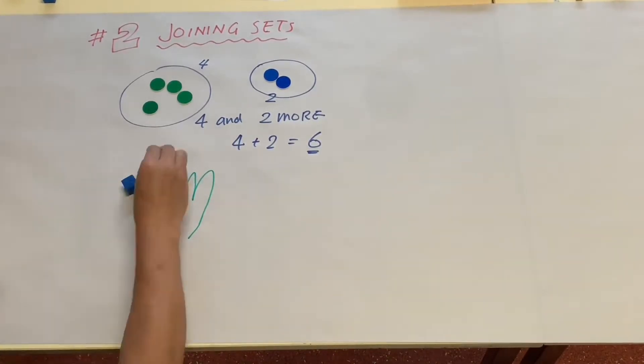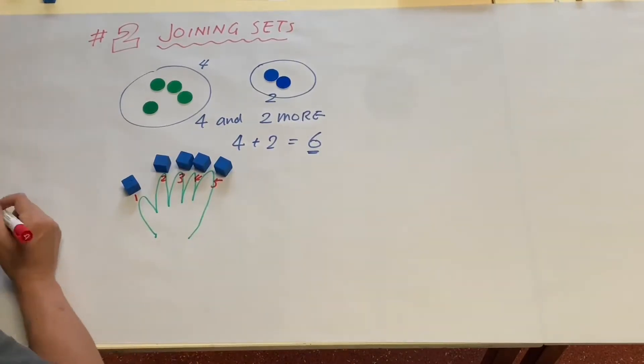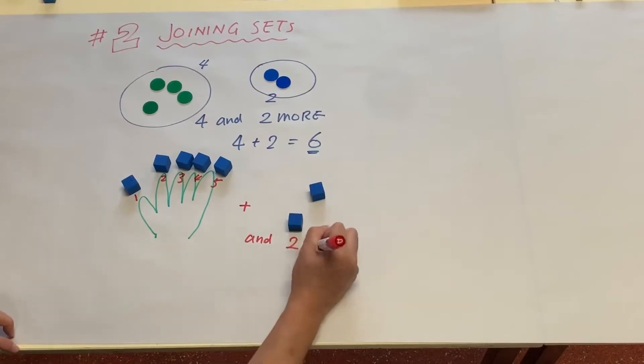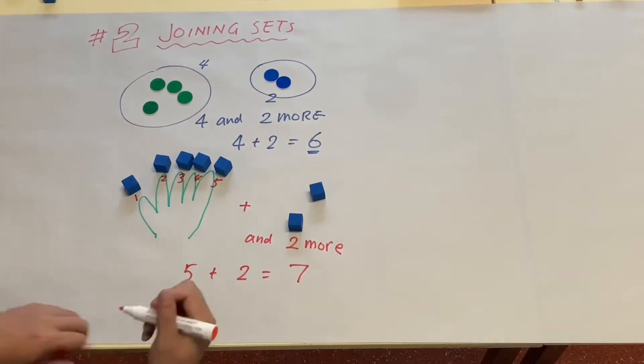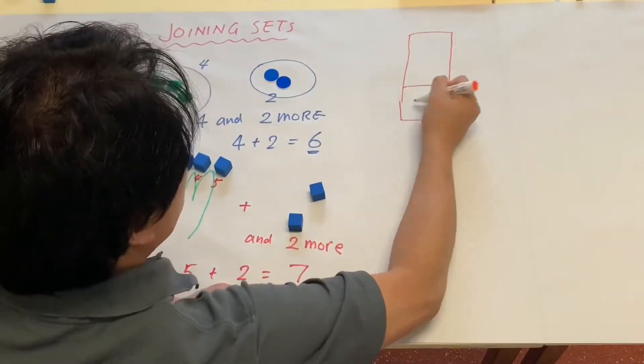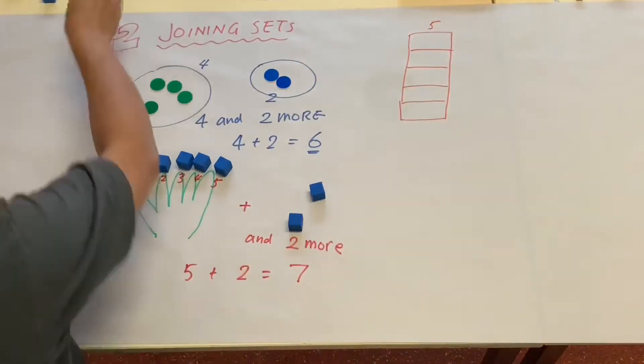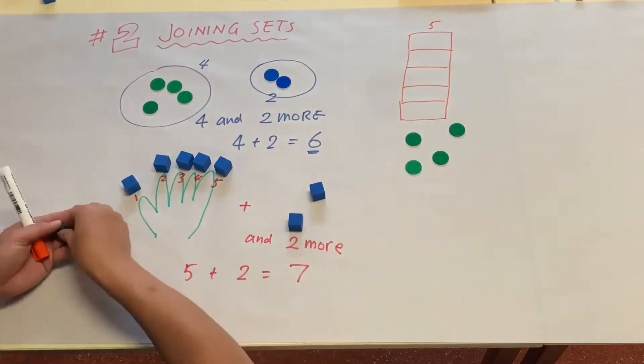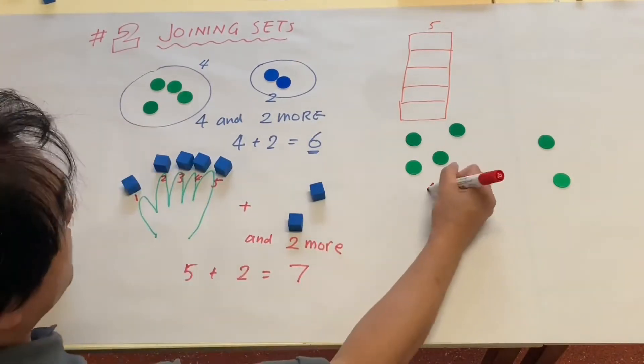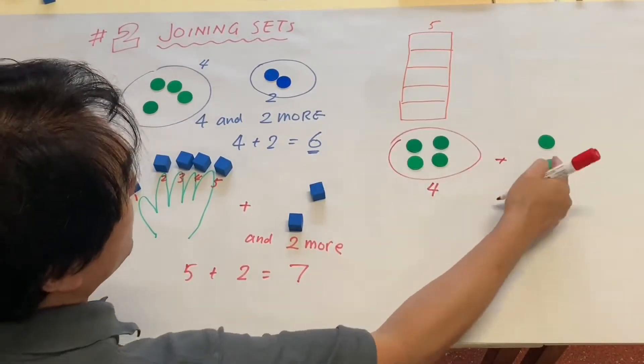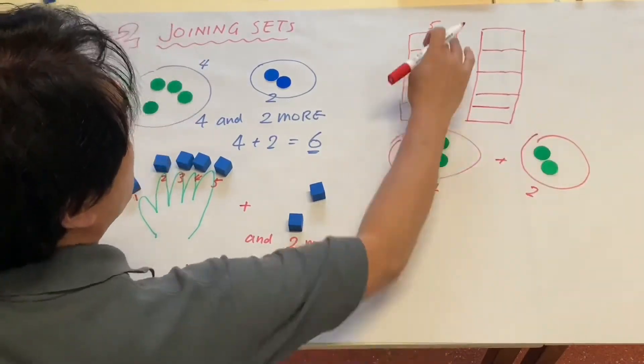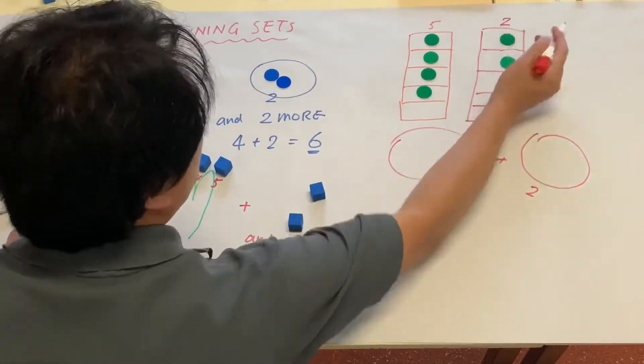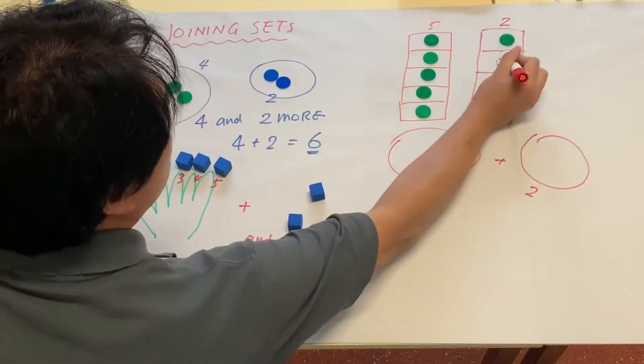Another important part is of course using five, because we have five fingers on one hand. Utilizing the five or frame of five is extremely important. So four plus two in the five frames is four plus two, which is exactly the same as five plus one.